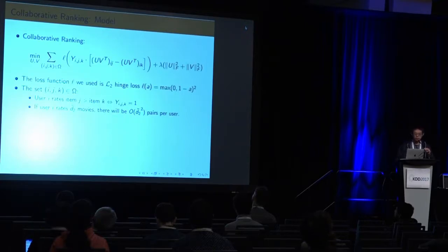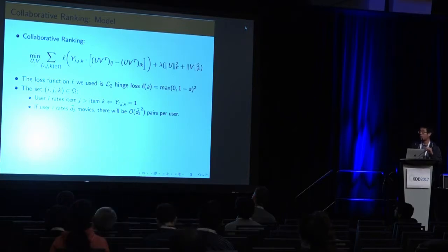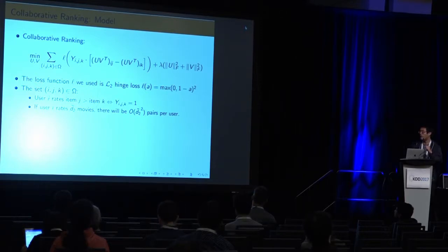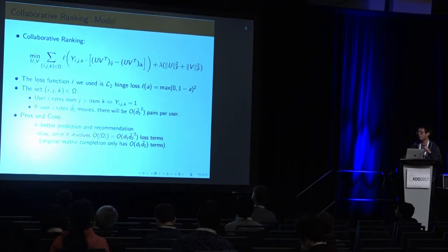Here is the objective function I'm using. We have the same regression term, but for the omega, instead of the number of ratings in the matrix, we have a triplet. y_ijk equal to 1 means user i prefers item j over item k. Here we use L2 Hinge loss. All the data is much more. When you're using Netflix data, we have like 2.5 million users. But when you use pairwise comparison, that would be billions of pairwise comparisons. All the previous algorithms don't work.